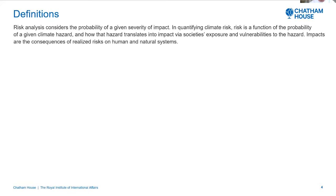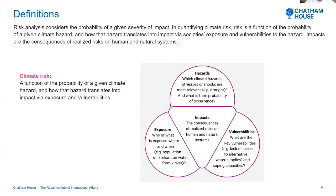So just a few definitions. Risk analysis considers the probability of a given severity of impact. In quantifying climate risk, risk is a function of the probability of a given climate hazard, and how that hazard translates into impacts via society's exposure and vulnerabilities to the hazards. Impacts are consequences of a realised risk on human and natural systems. Climate risk is a function of the probability of how given climate hazards translate into impact via exposures and vulnerabilities — how hazards, exposures, and vulnerabilities all coalesce into the probability of a given impact.